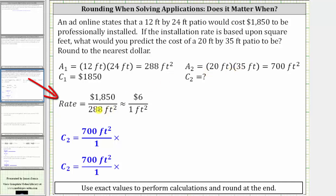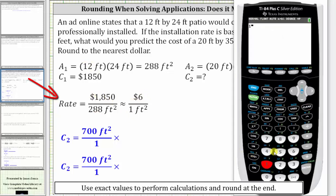But a common error is to find the unit rate, round, and then perform more calculations. To get the rounded rate of $6 per square foot, we would take $1,850 and divide by 288 square feet, which to the nearest dollar does give us $6 per one square foot, or just $6 per square foot.